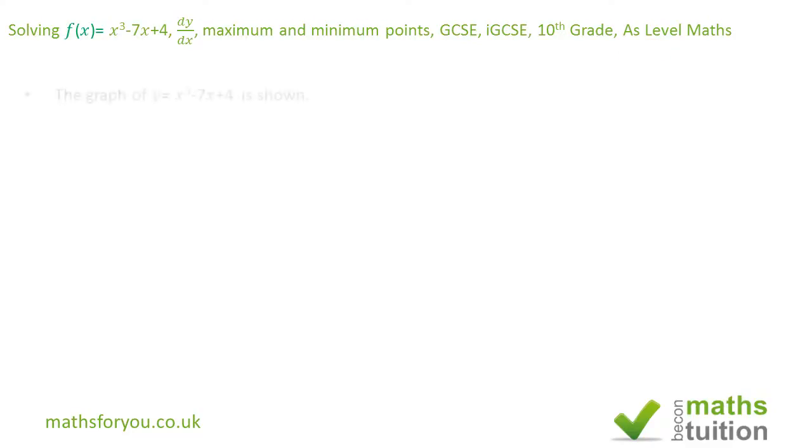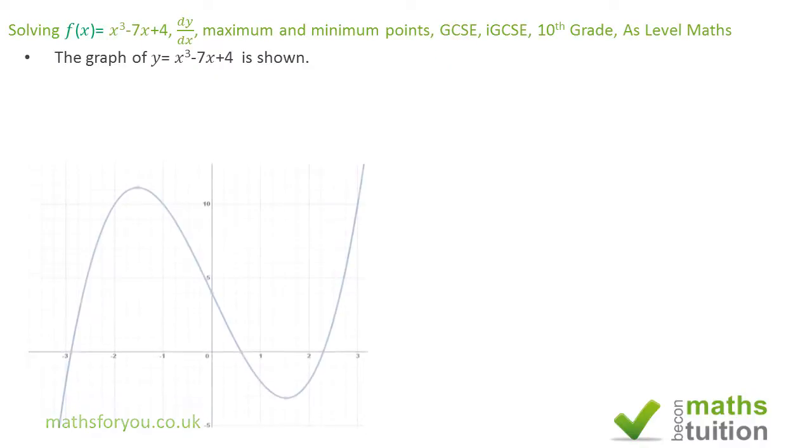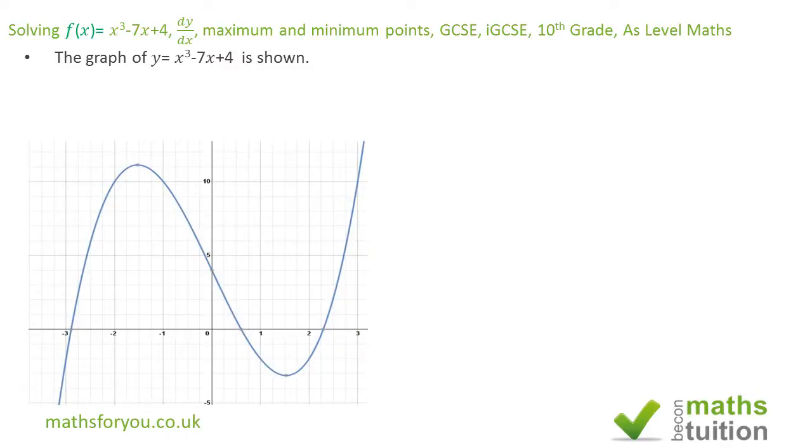Okay now here we go. It says the graph of y is equal to x³ minus 7x plus 4 is shown. This is how it is asked for the GCSE question paper. This is the graph here. Now note here that the graph has got grid lines there.